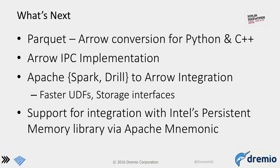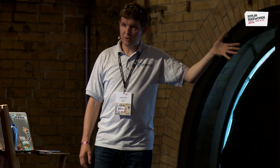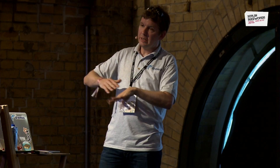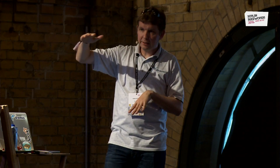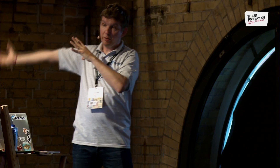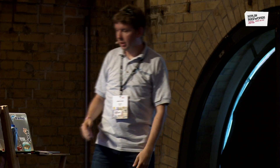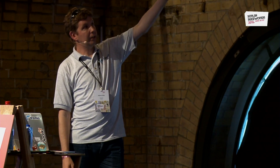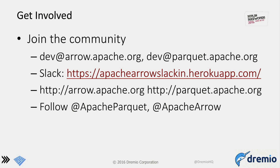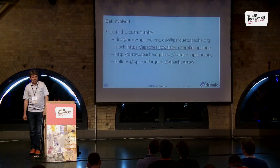Next steps include a shared Parquet-to-Arrow conversion library. There's already a common format all projects have agreed on; now we need shared libraries and integration work. There's also interest in Intel's persistent memory library, Apache Mnemonic. Persistent memory is interesting not just for persistence but because it sits between SSD and RAM — slightly higher latency than RAM but much cheaper, giving a good compromise. To join the conversation, check the dev mailing list or follow the Twitter accounts.